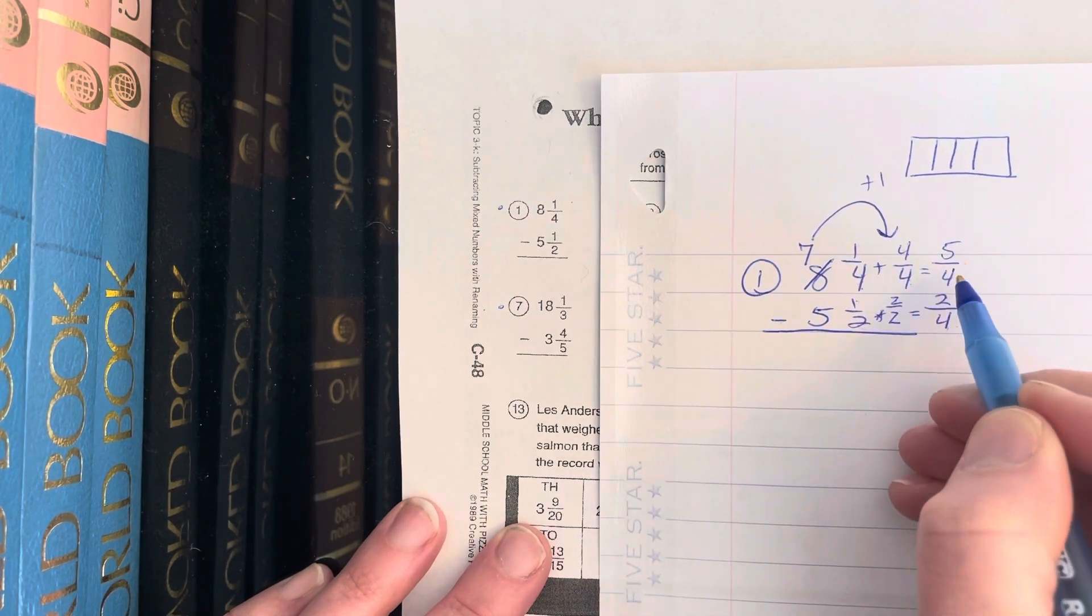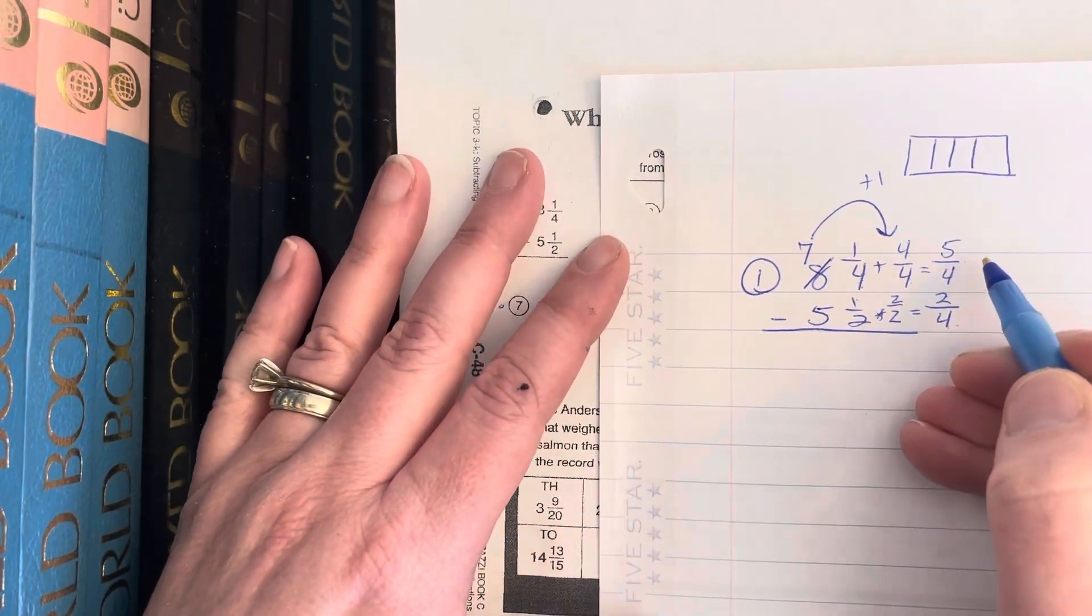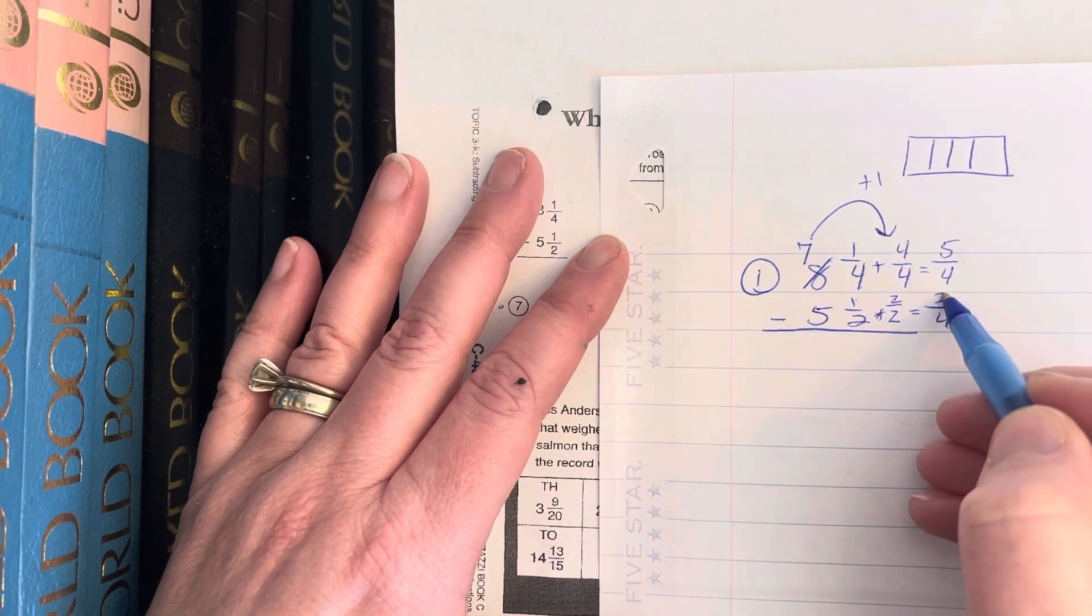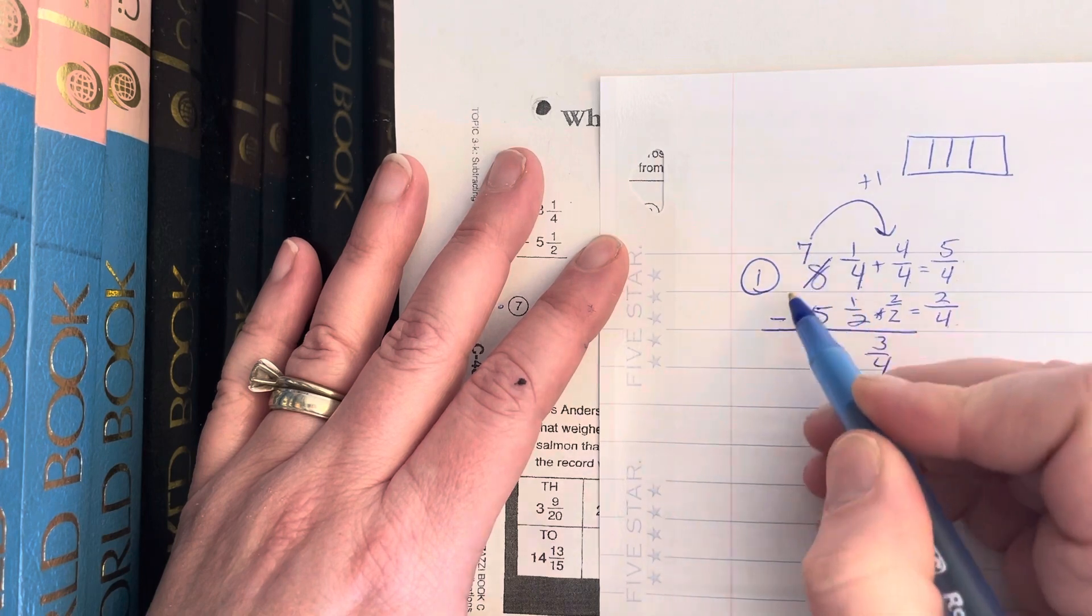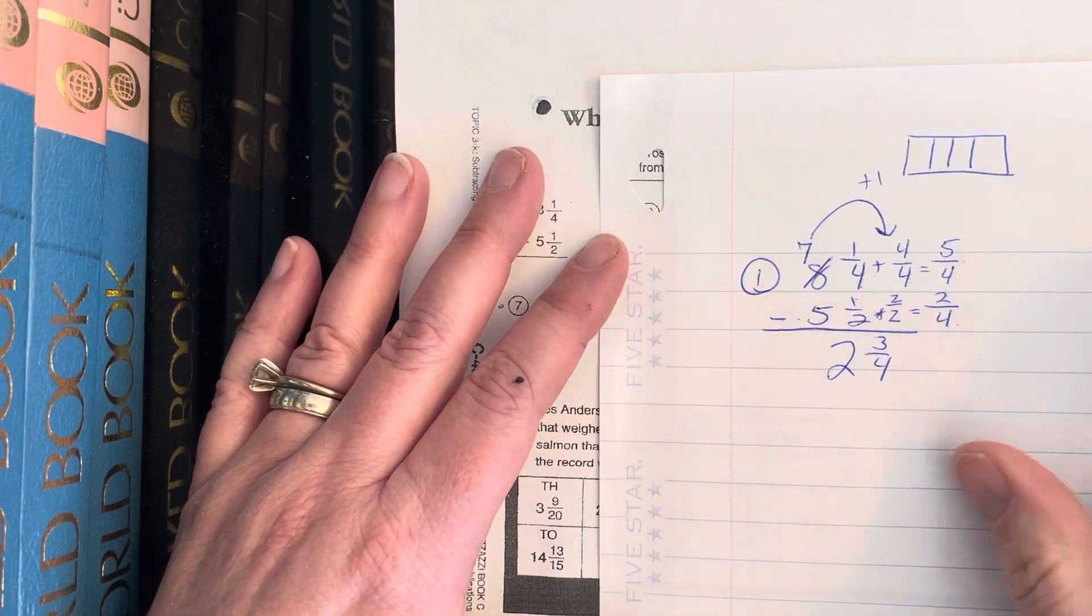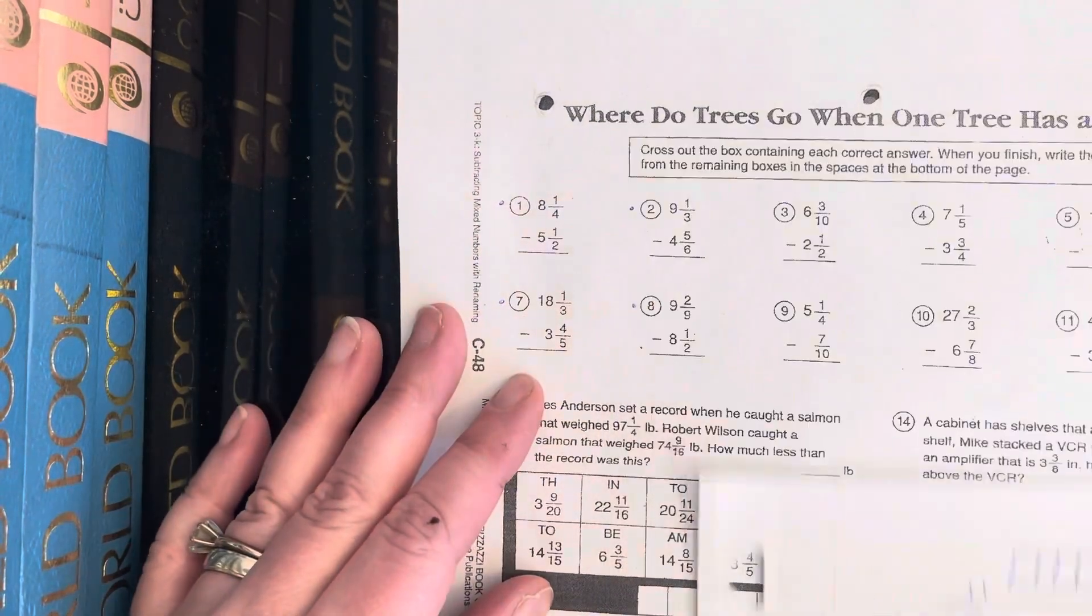So now I started with 1/4 of a cake, I gave it a whole cake, now I have 5/4 of a cake. 5/4 minus 2/4 is going to give me 3/4. 7 minus 5 is 2. Sometimes students forget that we still have whole cakes to subtract. This is already in simplest form; that should be my final answer.